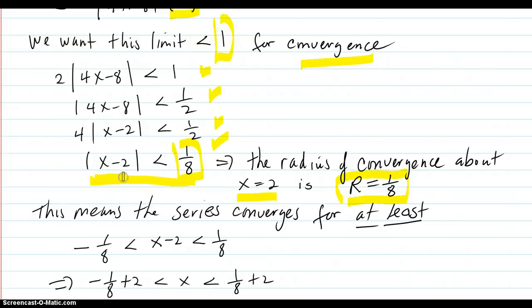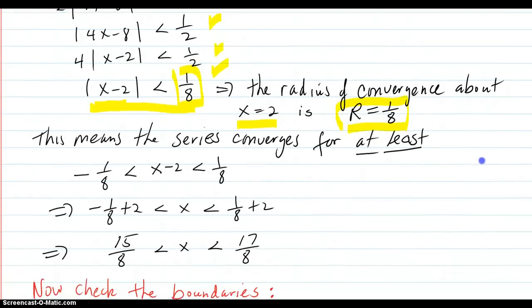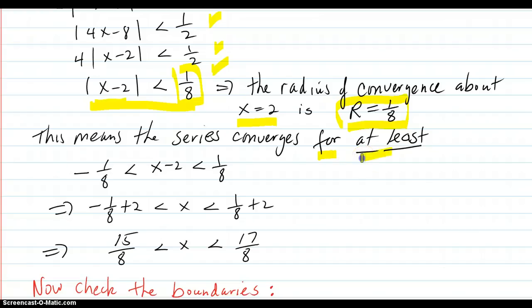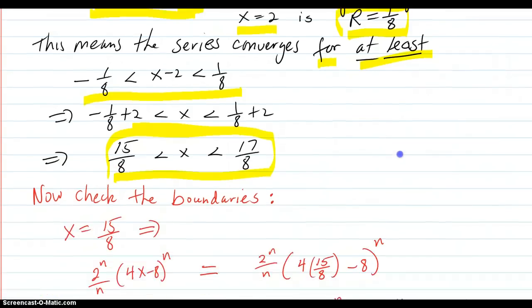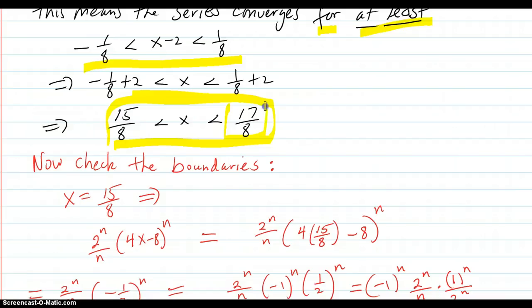Centered at x equals 2. It means that the series converges for at least these values here, which means this, which means these. But what about the endpoints?